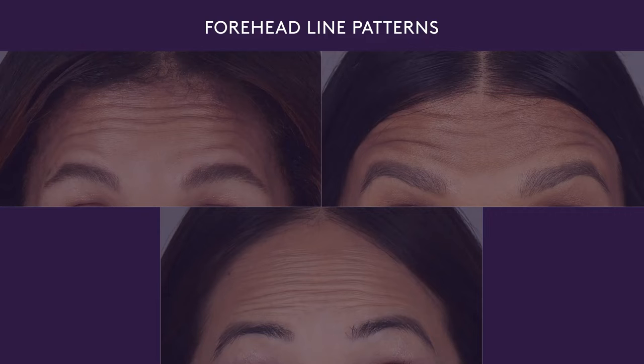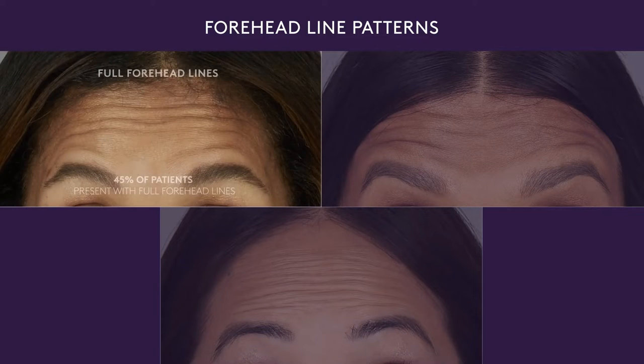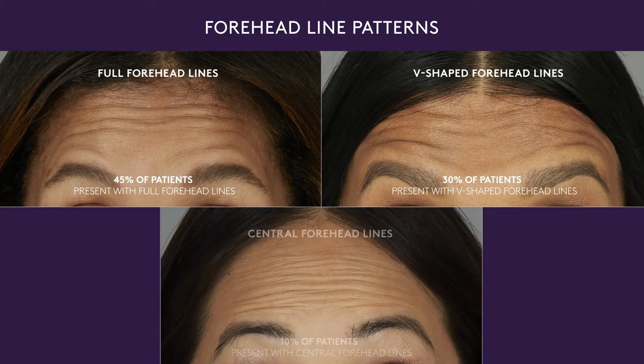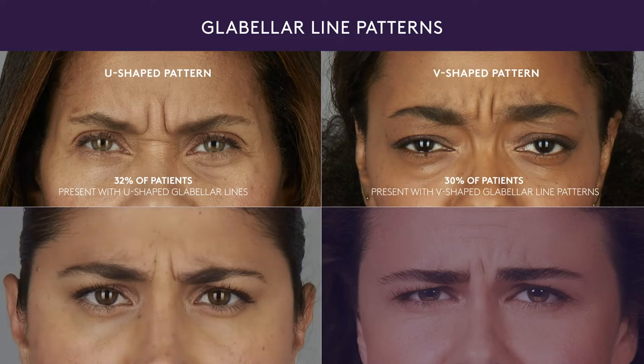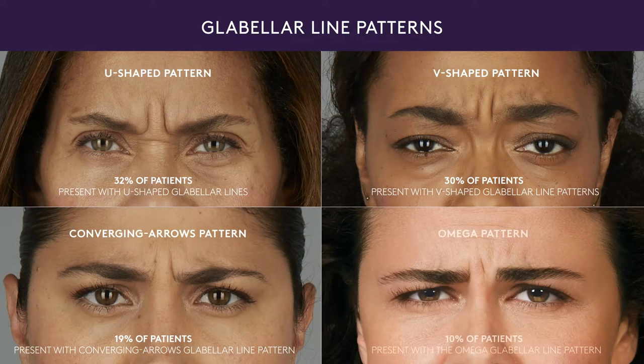There are generally three types of forehead lines: full forehead lines, V-shaped forehead lines, and central forehead lines. Go ahead and raise your brows for me, Darius — here you can see that Darius has a more central forehead pattern. There are four glabellar line patterns: U-shaped, V-shaped, converging arrow, and omega. In Darius — go ahead and frown — you can see that he has the U-shaped pattern.